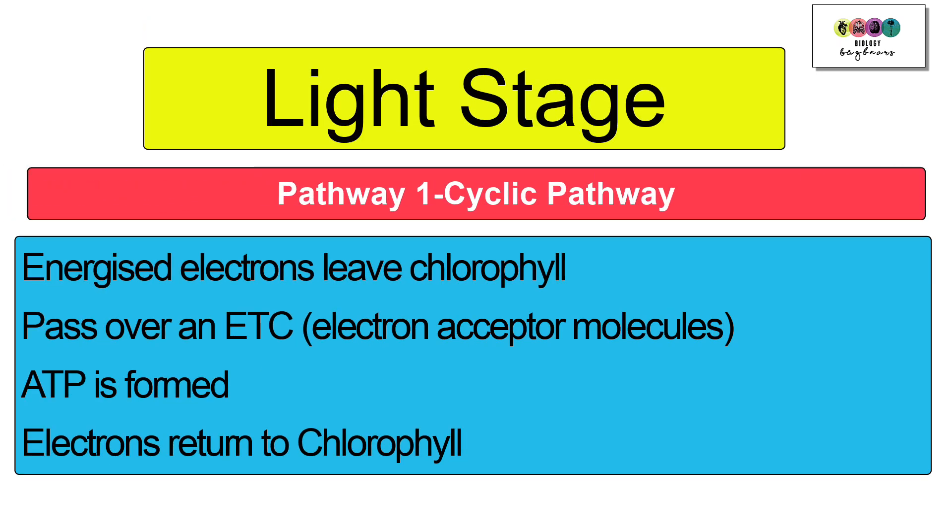In the light stage we've learned that there are two pathways. Pathway one is the cyclic pathway where energized electrons will leave chlorophyll, they'll pass over an electron transport chain which is just a series of electron acceptor molecules and as a result ATP is formed, but ultimately the electrons return to chlorophyll.